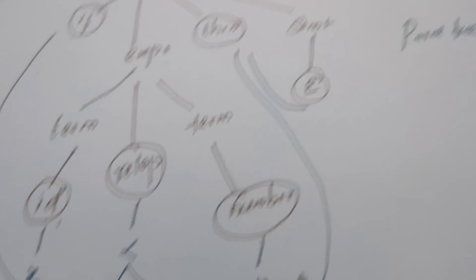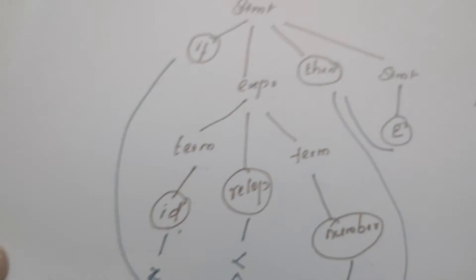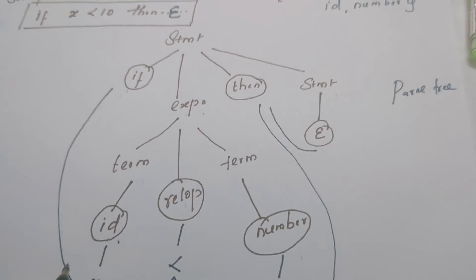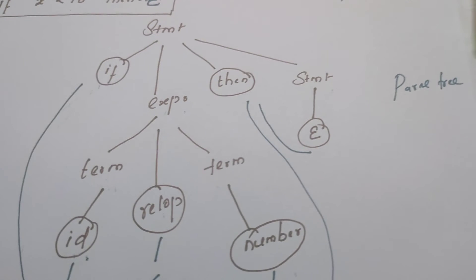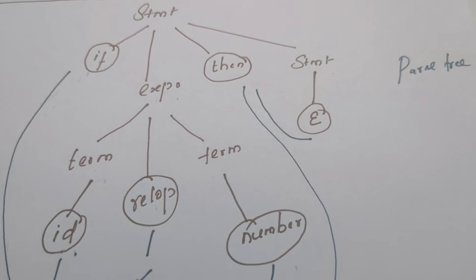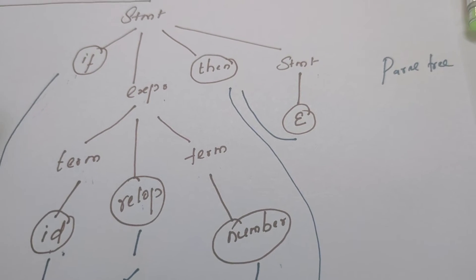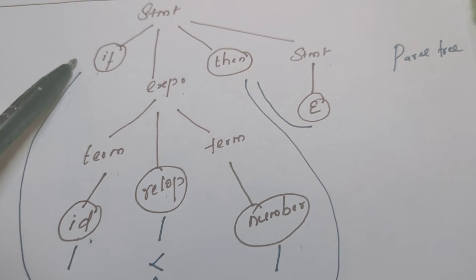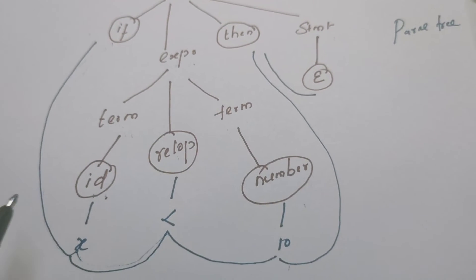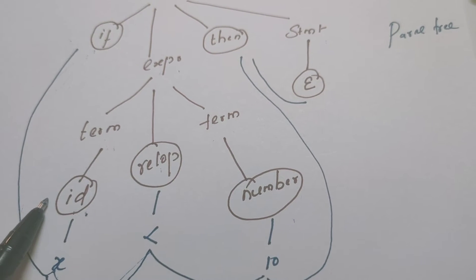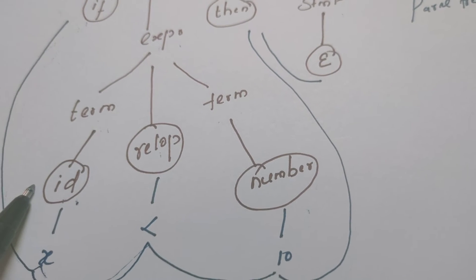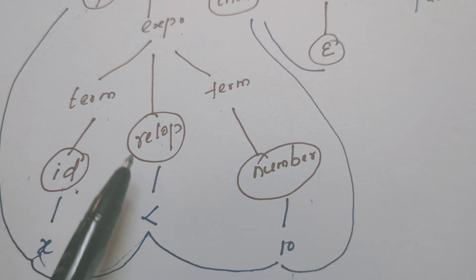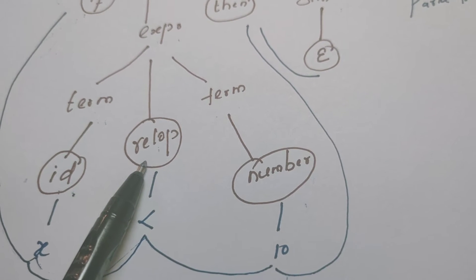If you observe the parse tree, the terminals are the leaf nodes of the parse tree, and these are nothing but the tokens of the programming language. 'if' is a leaf node — if is a keyword, and we know a keyword is a token. 'id' is a leaf node — identifier is a token. Relational operator is also a token.